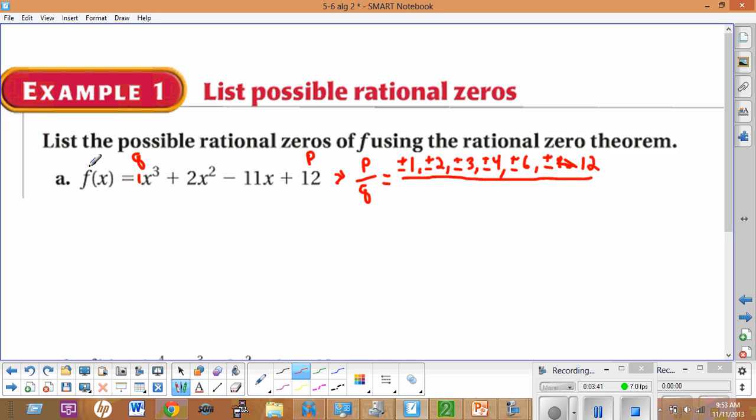Our q, our constant q is a 1. And 1 is a beautiful thing because the only factors of 1 are plus and minus 1. 1 times 1 and negative 1 times negative 1. Now, 1 on the bottom makes our list of factors a lot shorter, so that's a good thing.